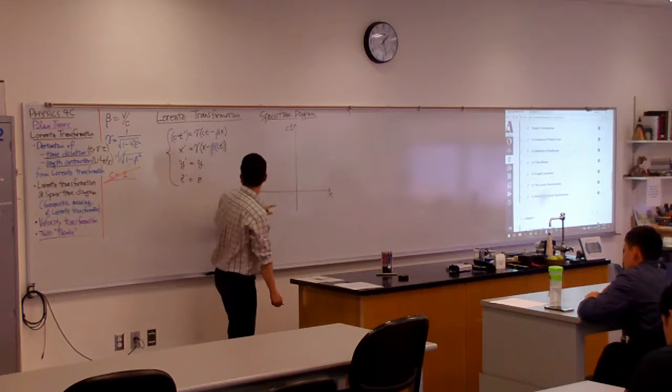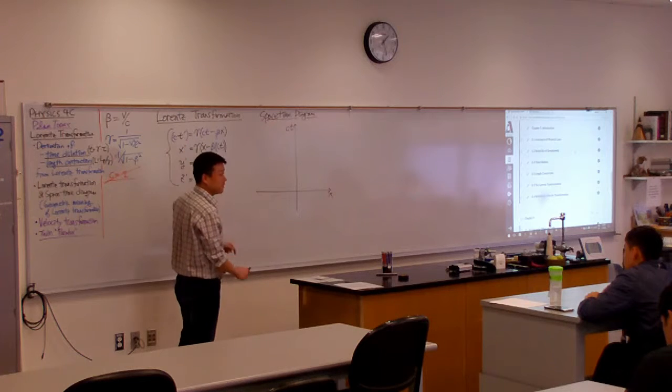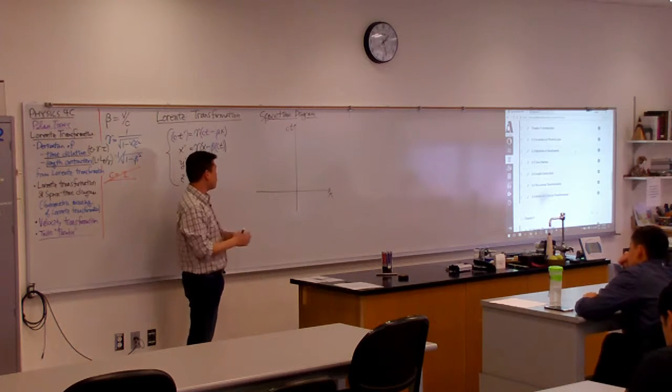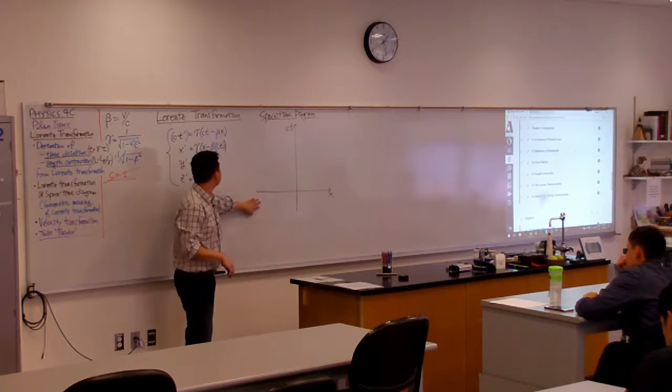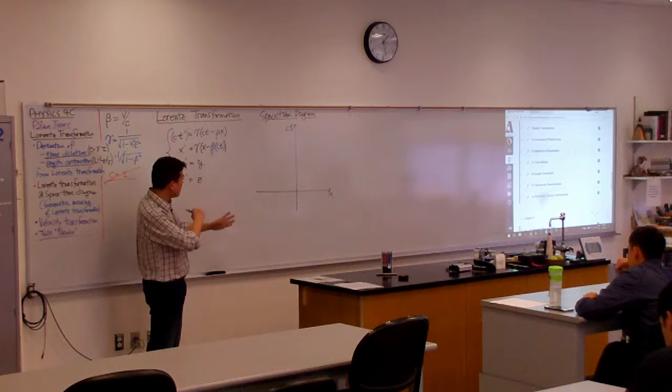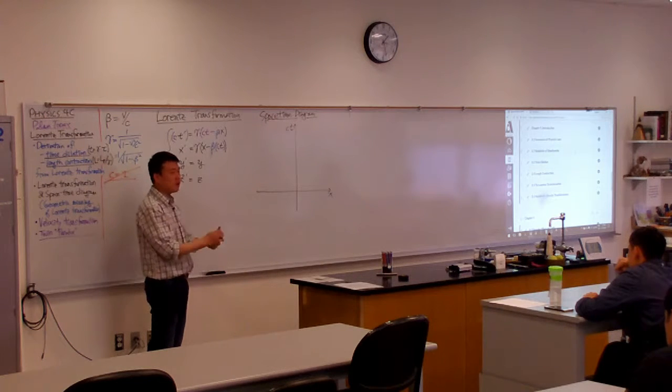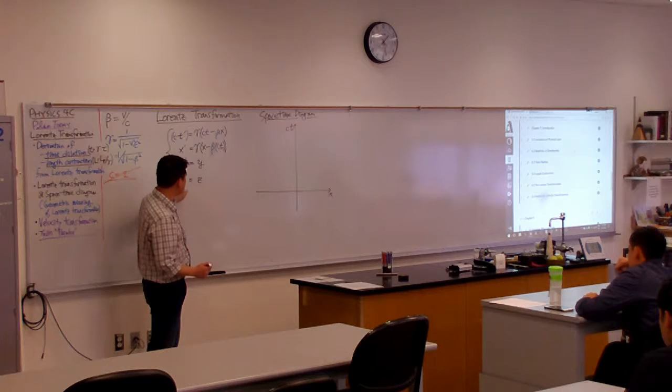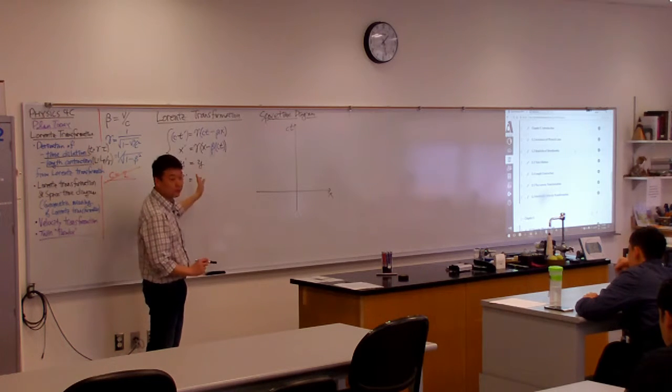But I put in c here because I'm now getting a habit of putting c here. And so if you want to draw a two-dimensional diagram, you will be dealing with only one-dimensional motion, which is fine. We are defining our coordinate axis in such a way that y and z things are kind of boring, so we don't have to worry about that.